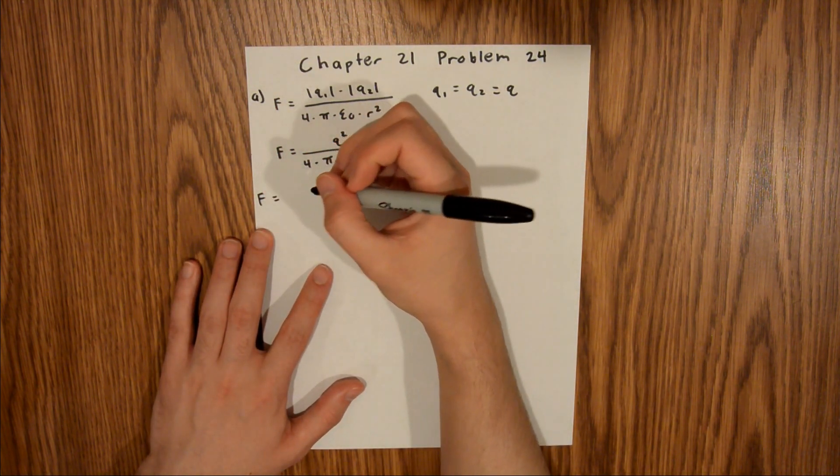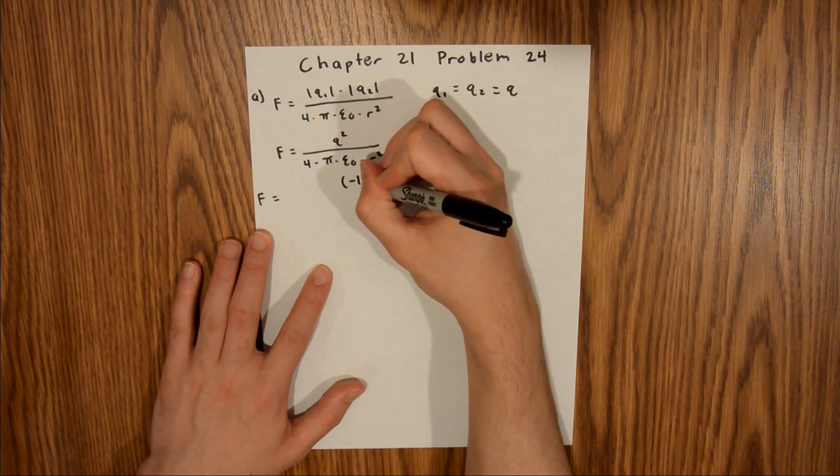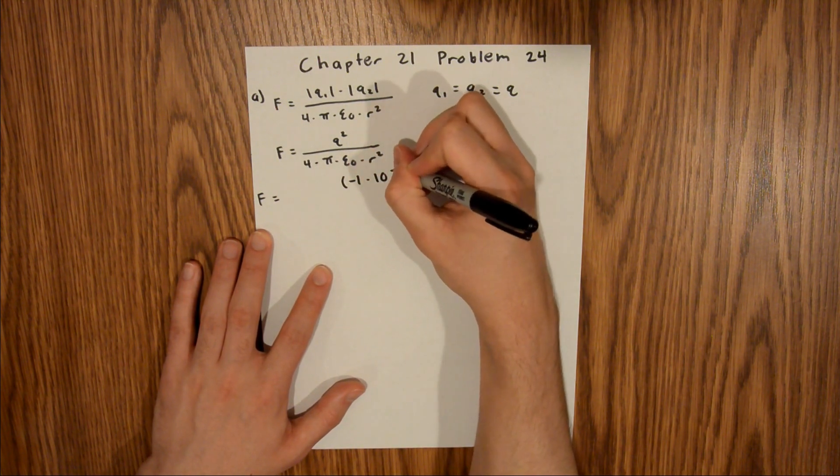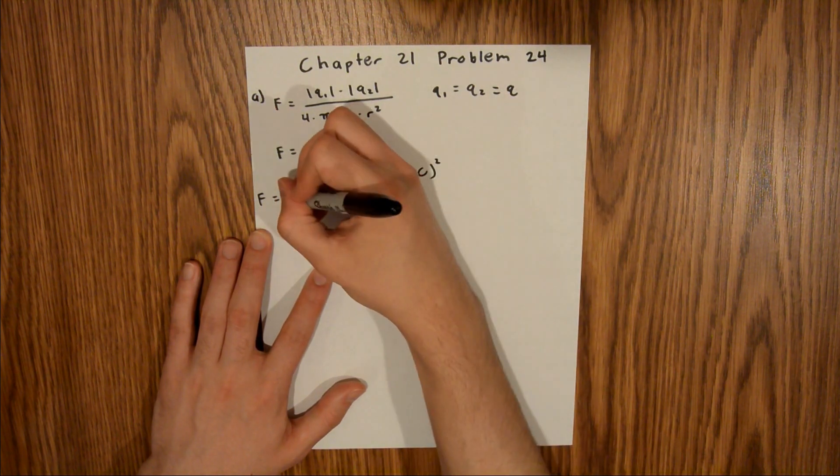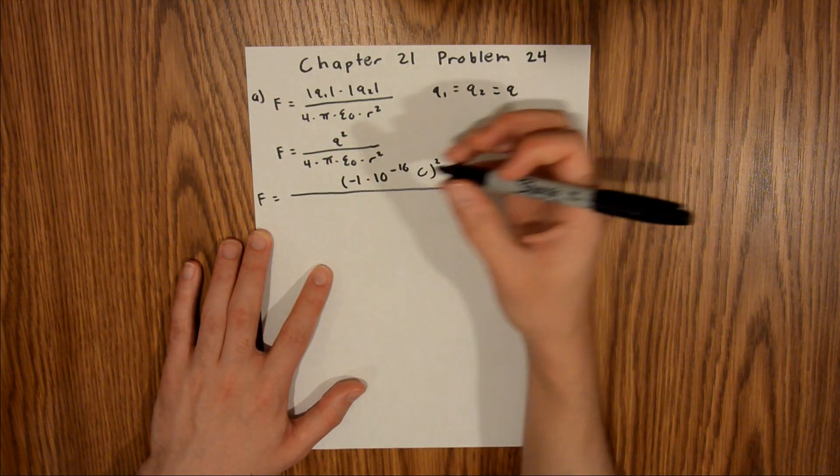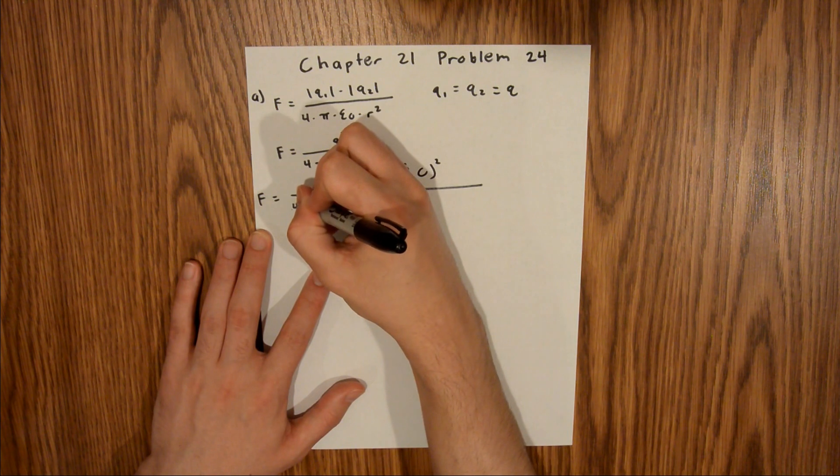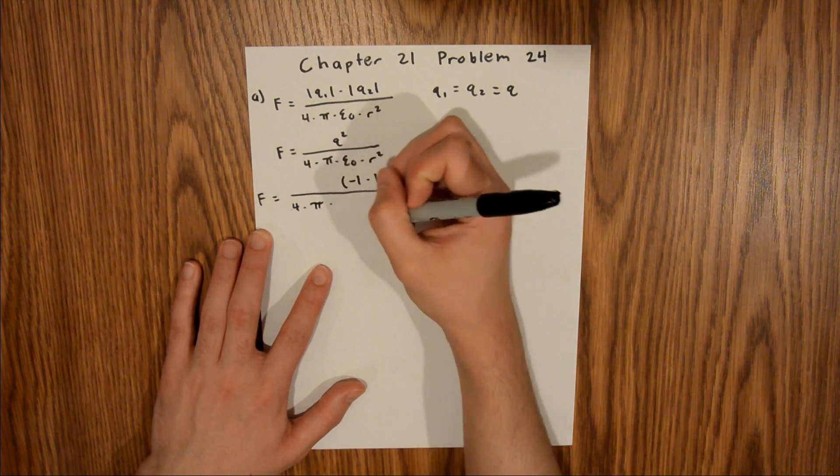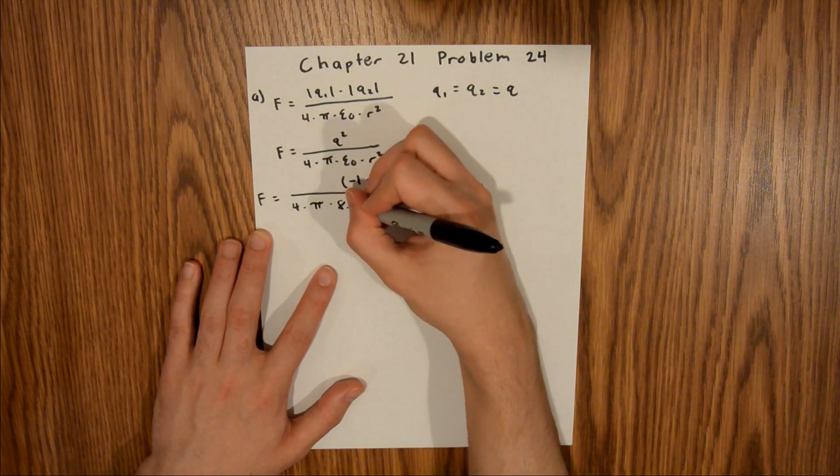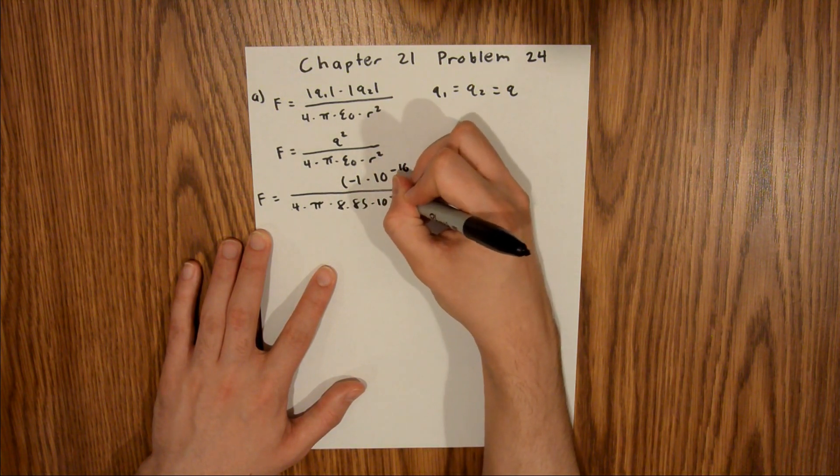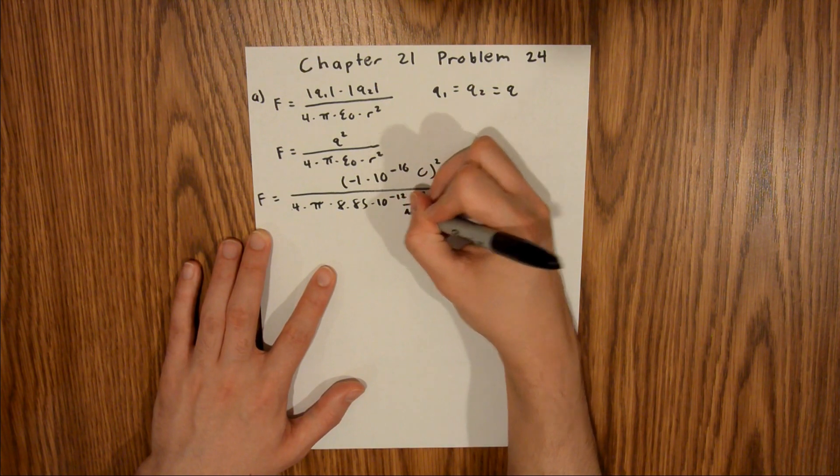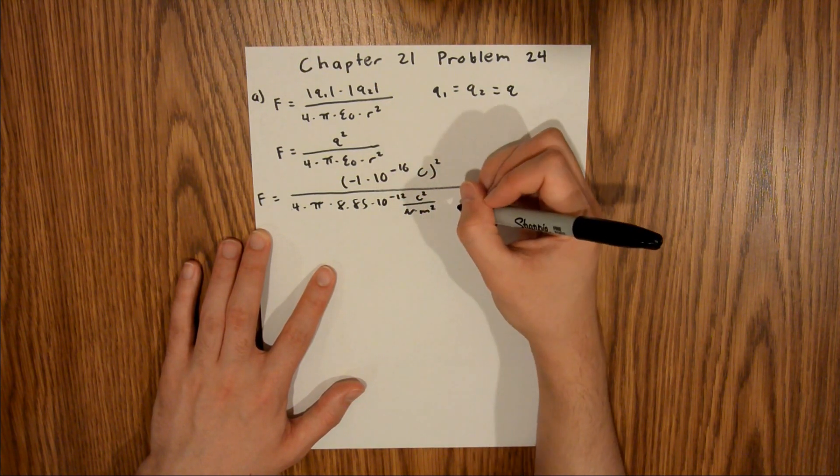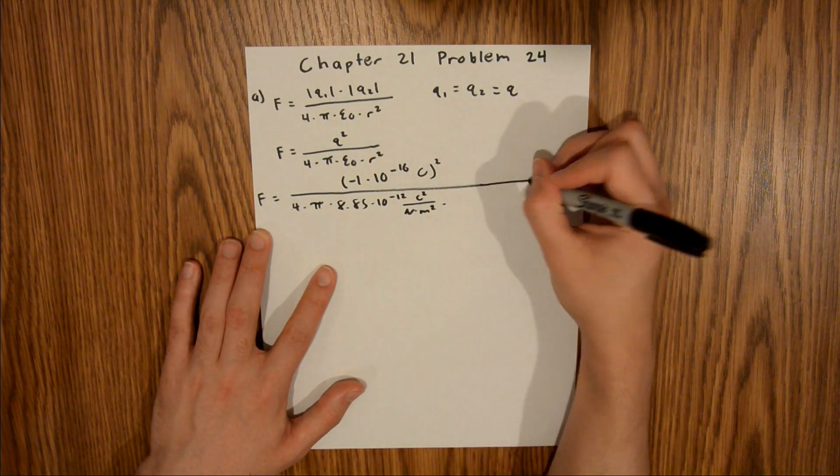This is going to be equal to negative 1 times 10 to the negative 16th coulombs squared divided by 4 times pi times epsilon naught, which is 8.85 times 10 to the negative 12th coulombs squared per newton times meter squared times our radius squared.